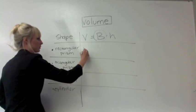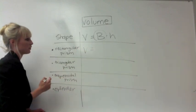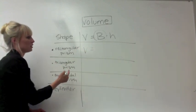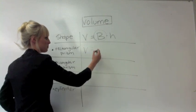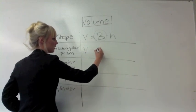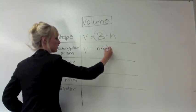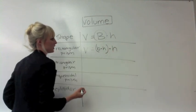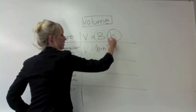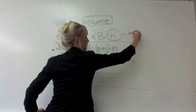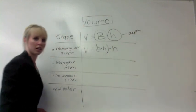So let's start out with a rectangular prism. In order to find the volume of a rectangular prism, you multiply the area of the base, which, let's just use base times height, times the height or the depth of the figure.